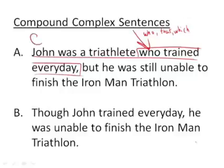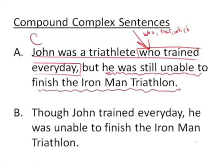The underlined part is complex. Now the squiggly part is going to be next — I'm going to mark the independent clause. 'He was still unable to finish the Ironman triathlon' is a sentence that can stand on its own, connected with the conjunction 'but.' That is comma-but. And just like that, we've taken the complex sentence and combined it with an independent clause, giving us a compound complex sentence.